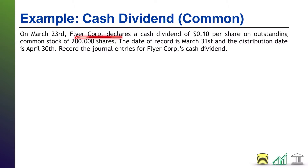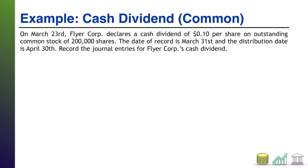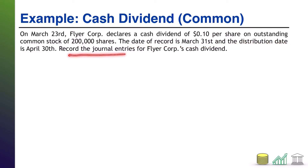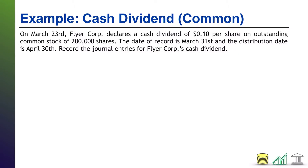On March 23rd, FlyerCore declares a cash dividend of 10 cents per share on outstanding common stock of 200,000 shares. The date of record is March 31st and the distribution date is April 30th. Record the journal entries for FlyerCore's cash dividend.